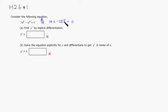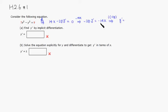Then we just need to solve for y prime. Subtract 14x from both sides, giving you negative 2y times y prime equals negative 14x. To isolate y prime, divide through by negative 2y. So y prime equals negative 14x divided by negative 2y. The negatives cancel and 14 divided by 2 is 7, so y prime is 7x over y.